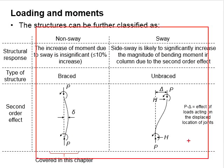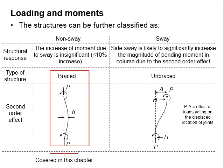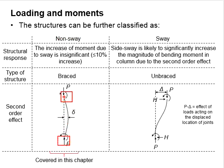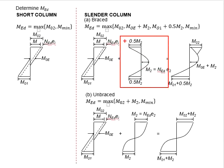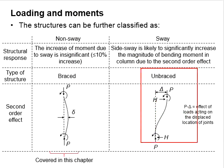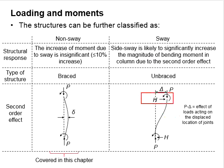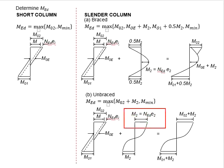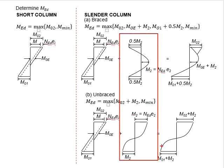A braced structure normally has the situation of no sway, where the top and bottom of the columns always remain in line with an axis. This leads to a situation of negative moment at the top and bottom of the columns. As for the unbraced column, the top part of the column is free to move laterally, which leads to accumulation of moments at the top of the columns. Due to the differences in restraint conditions, the moment profile will be different for braced and unbraced slender columns.